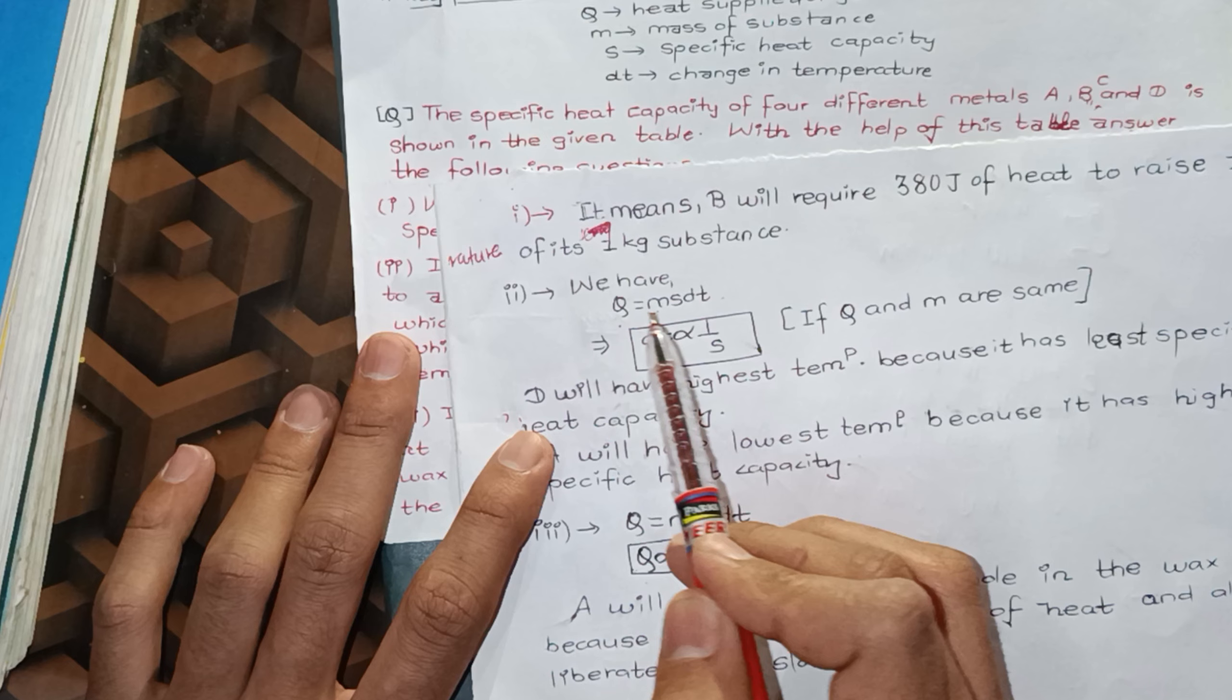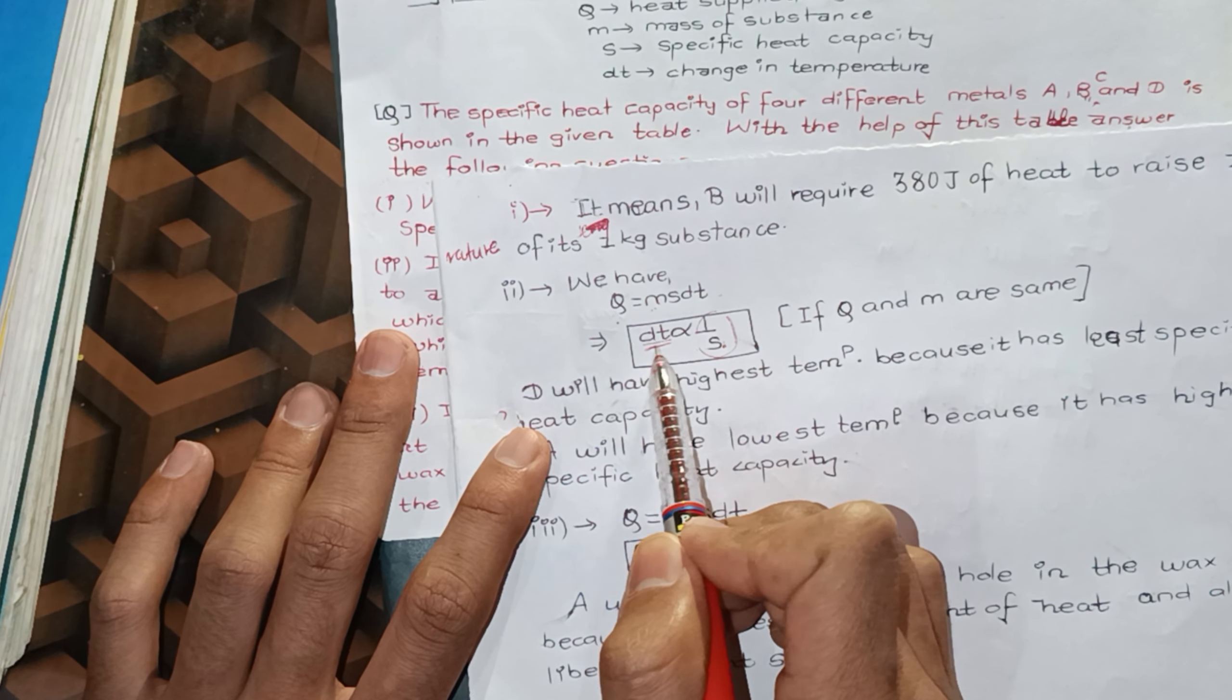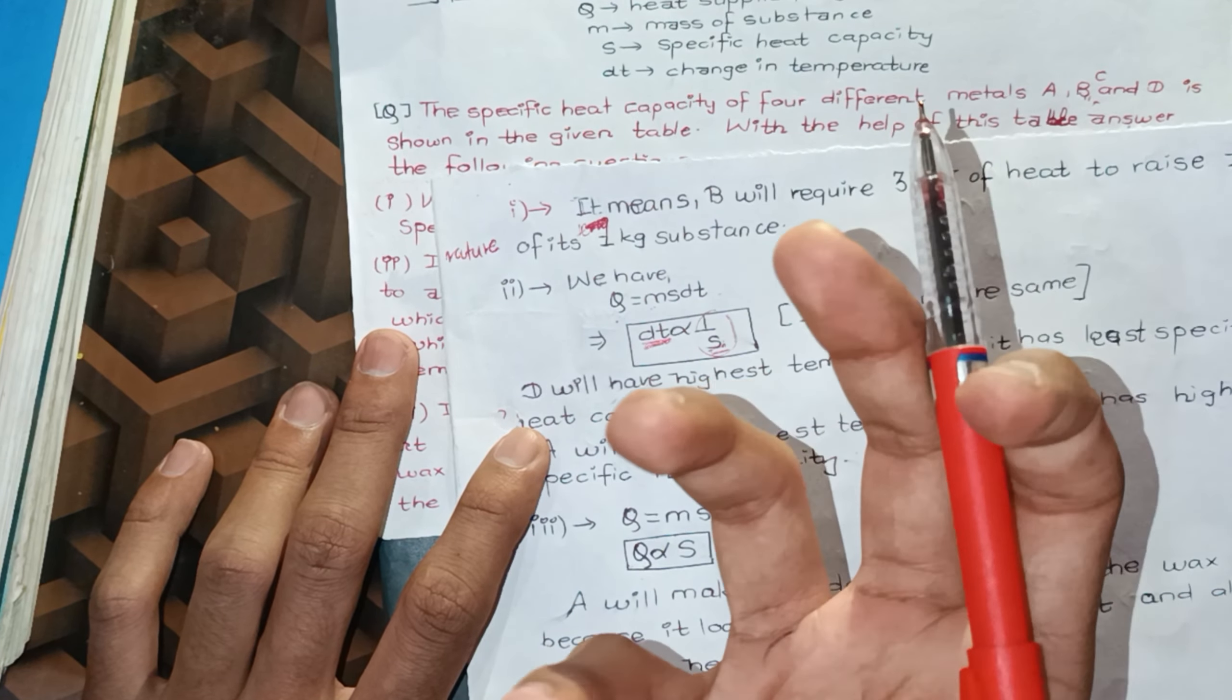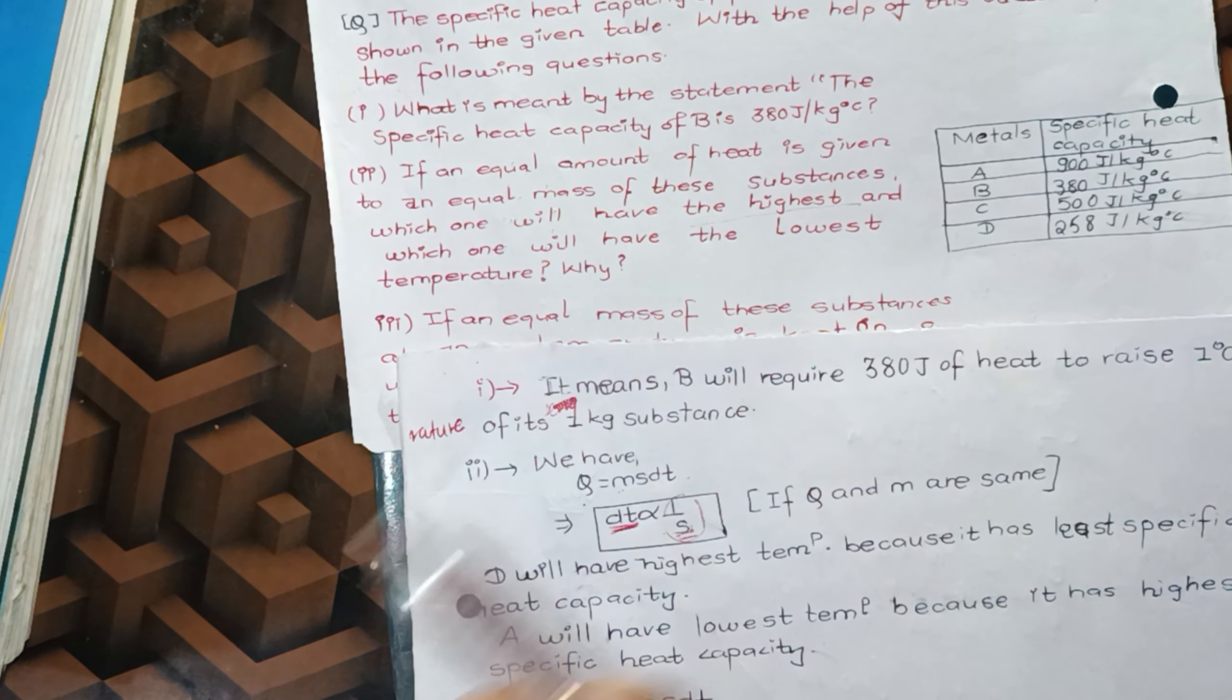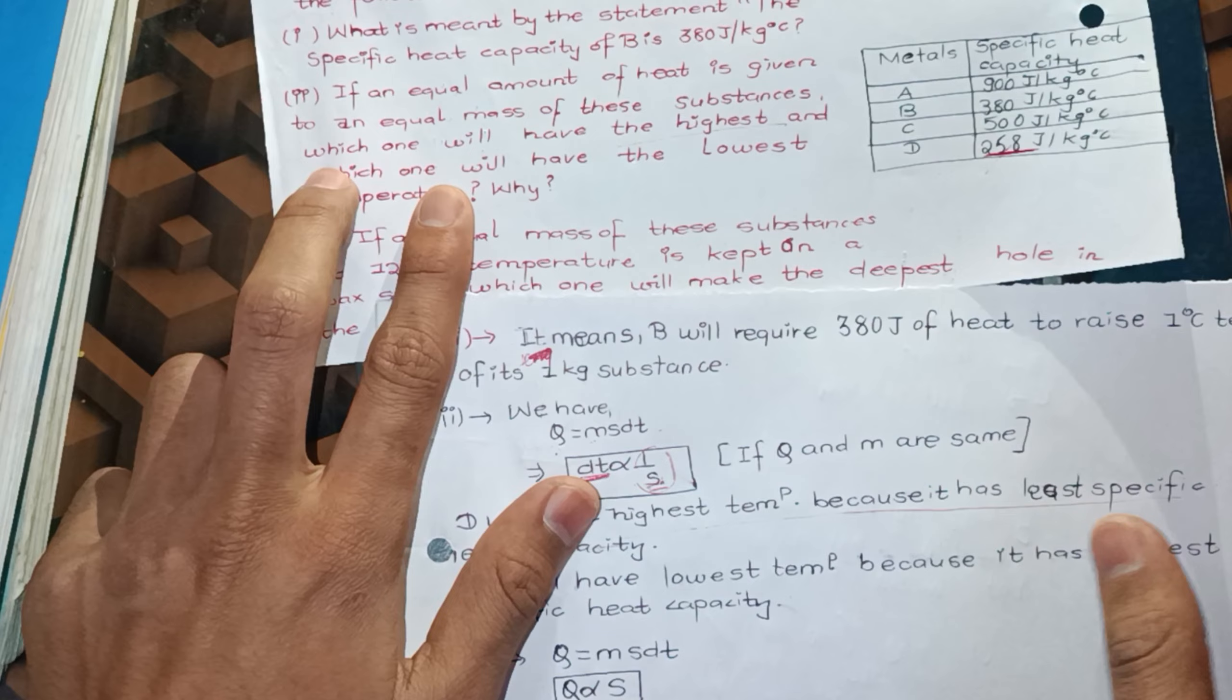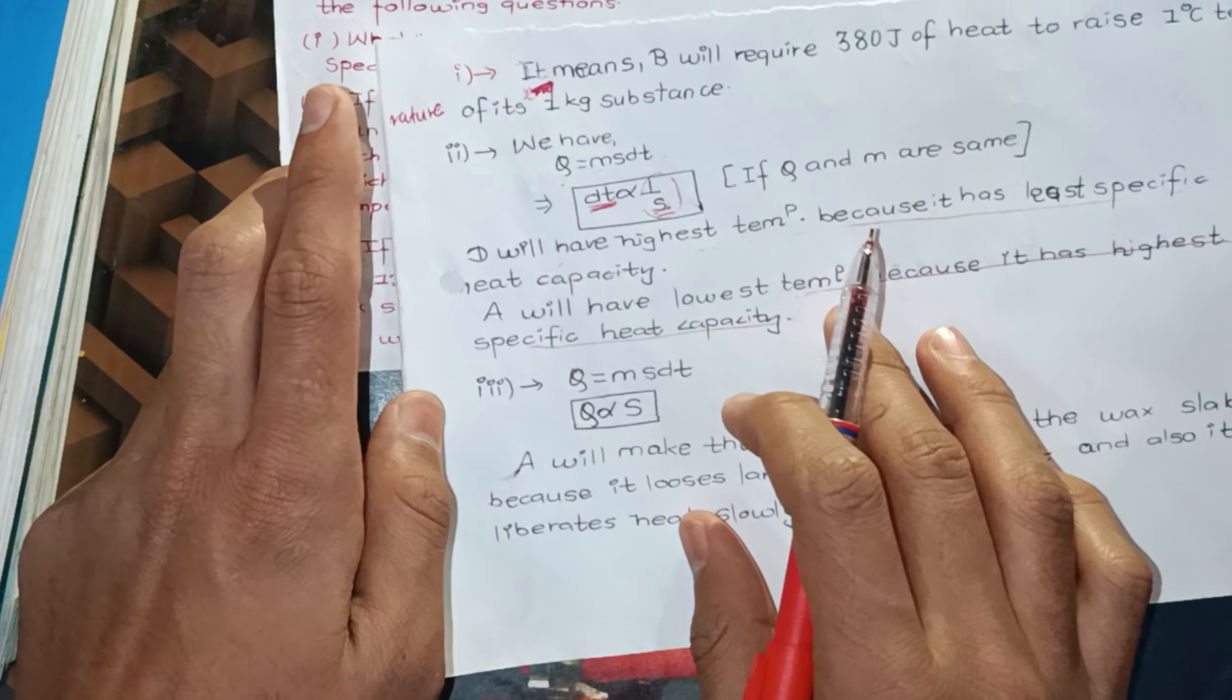It is equal to MSDT. So we can add the same quantity to get a change in temperature. If the specific capacity is low, whether the temperature change is high. So d will have the highest temperature because it has least specific capacity. A will have the lowest temperature because it has highest specific capacity.